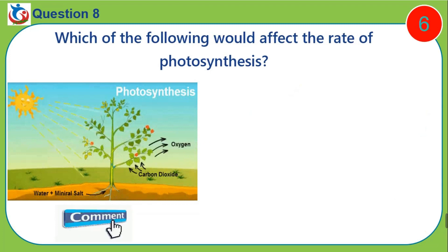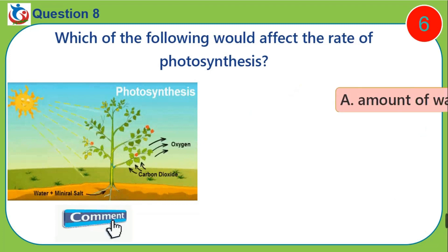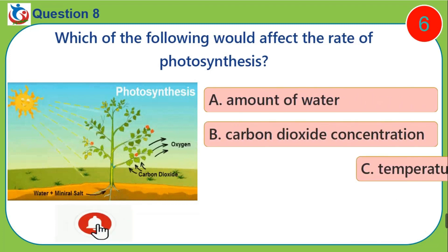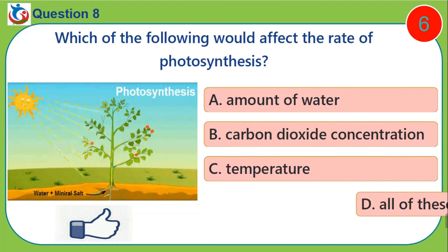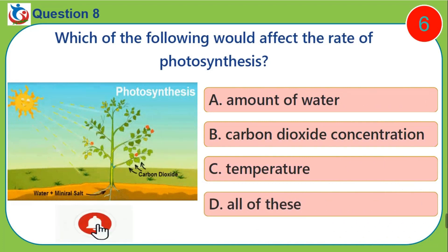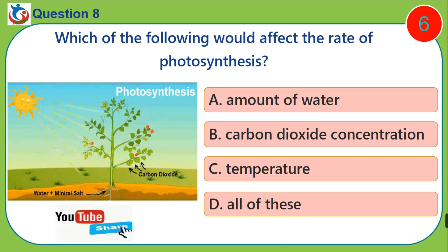Question eight: Which of the following would affect the rate of photosynthesis? A) amount of water, B) carbon dioxide concentration, C) temperature, D) all of these.